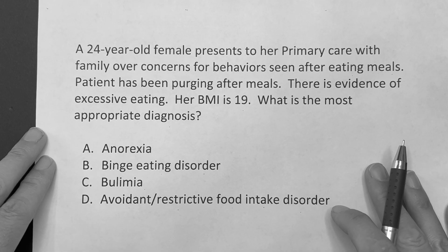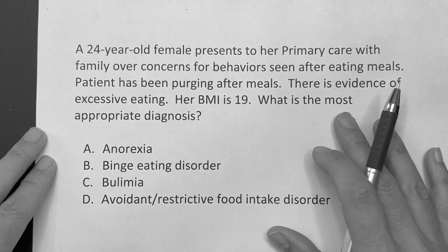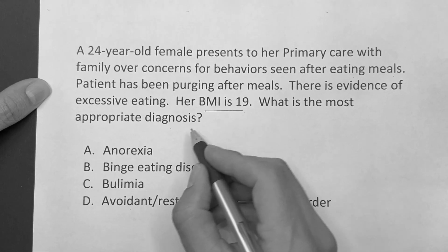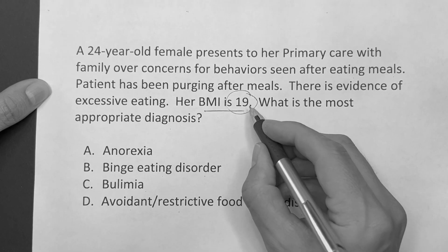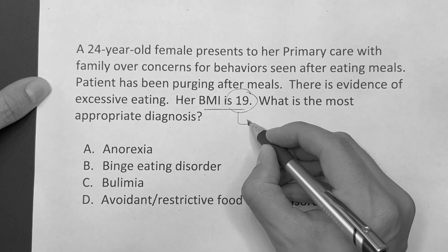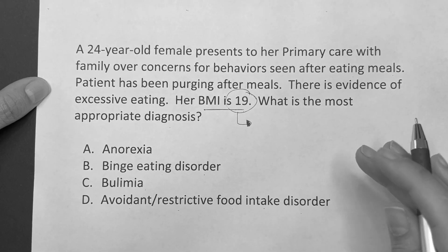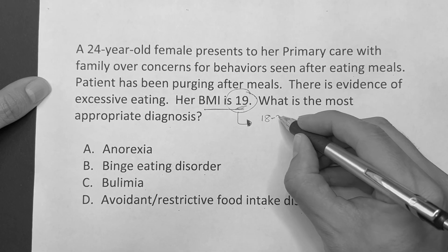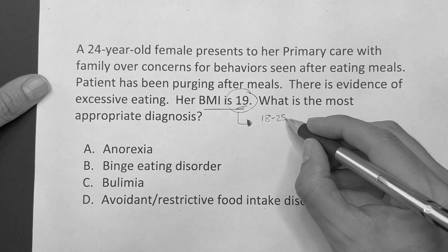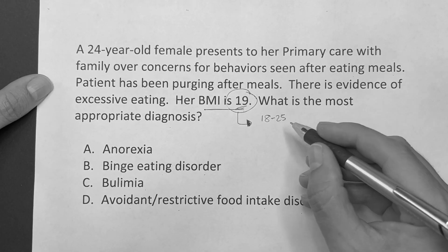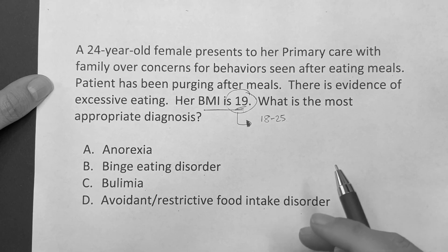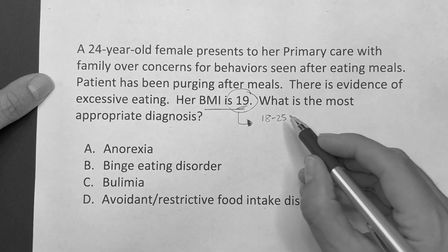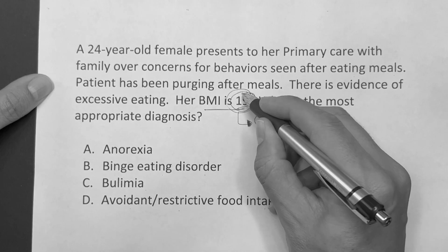You're almost guaranteed to see at least one question that differentiates these three disorders. All the information presented is really all you need for this question, because you have the BMI. The key with BMI is you have to know what normal is — that's very important on the Step exams because they won't say a patient is overweight or underweight. They'll just give you a BMI. Between 18 and 25 is normal. Below 18 is underweight. 26 to 30 is overweight, and 30 plus is obese. This person has a normal BMI.